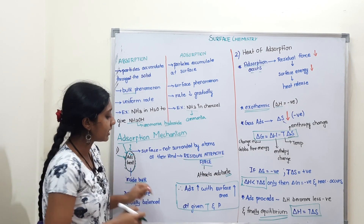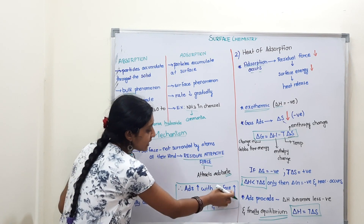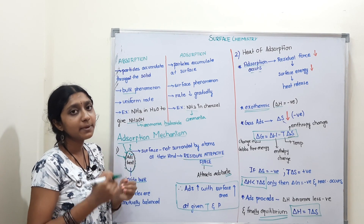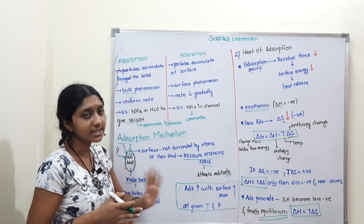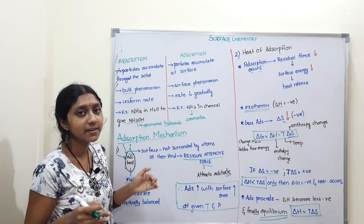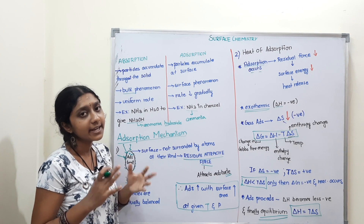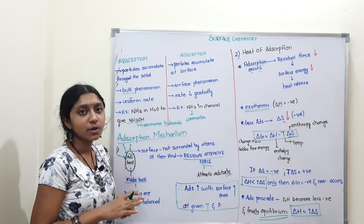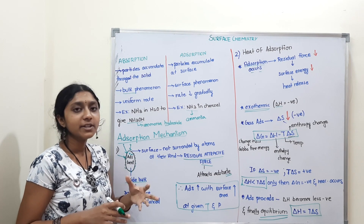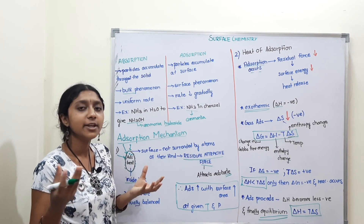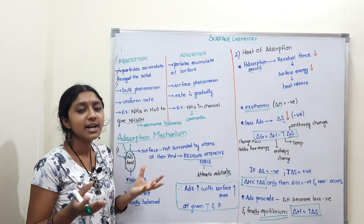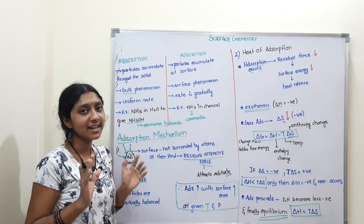Here is the conclusion: adsorption increases with increase in surface area. Surface area is very important. Adsorption increases at constant temperature and pressure as surface area increases. Now a question for you — answer in the comment section: if I am using a lump of charcoal versus a powder of charcoal, which one will adsorb more?